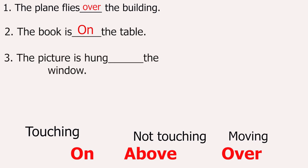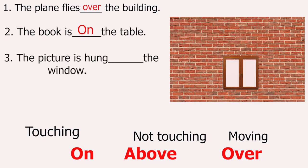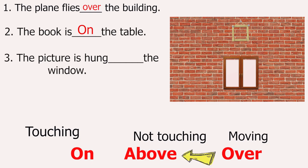The picture is hung ___ the window. The picture is on the wall, not touching the window. So we use 'above the window'. The picture is hung above the window.